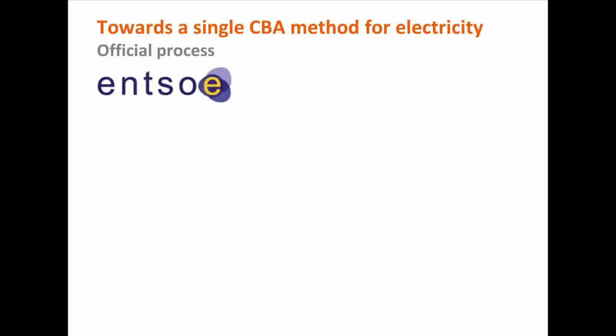If you look at the package, there is an official process described that will lead to the adoption of a single cost-benefit analysis method for electricity projects at European level, meaning all project promoters wishing to become a project of common interest would have to use this single method. The method starts with a proposal that will be made by ENTSO-E. The package, just published last week, says ENTSO-E will start making this proposal in November this year — about six months after adoption of the package.